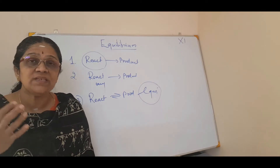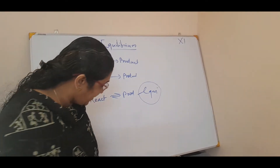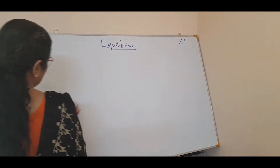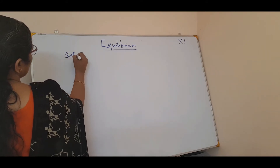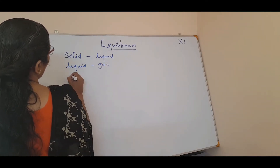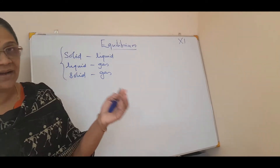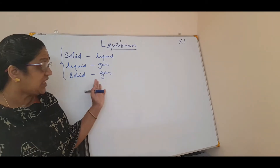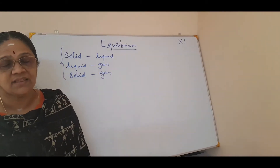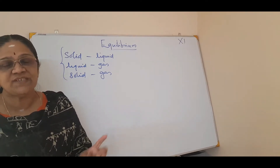Now we will look at physical equilibria — equilibria in physical processes. We will study three phase transformations: solid-liquid, liquid-gas, and solid-gas. These are called physical transformations because they can be converted back. We will then move on to chemical equilibria.